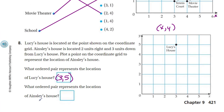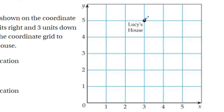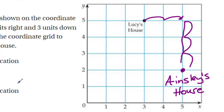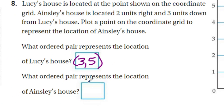What ordered pair represents the location of Ainsley's house? It said it was two units to the right from Lucy's house — so that's one unit here, two units brings us right here — and then three units down: one, two, and finally three. So now we're three units down, and this is where Ainsley's house is. The coordinate ordered pair is five for the x first, and then two the y second — so five, two.